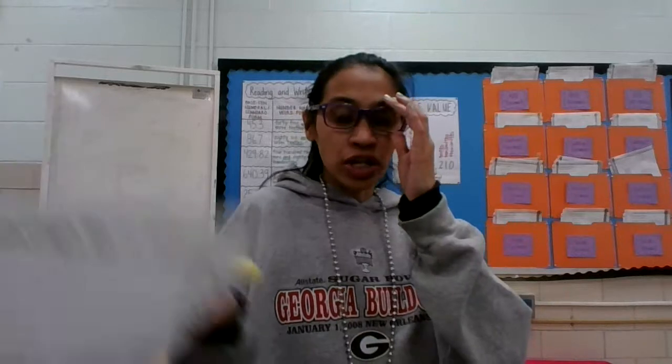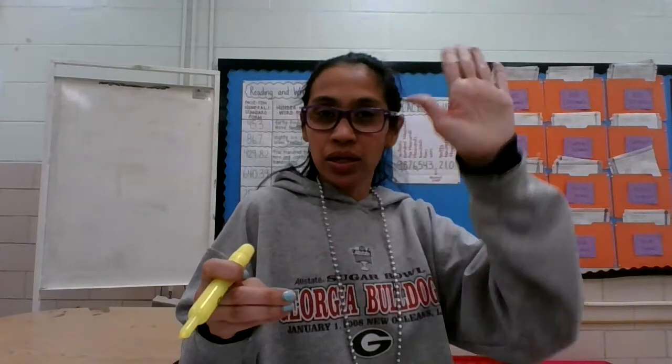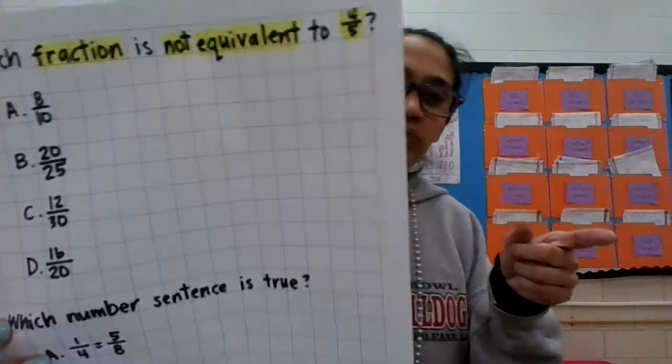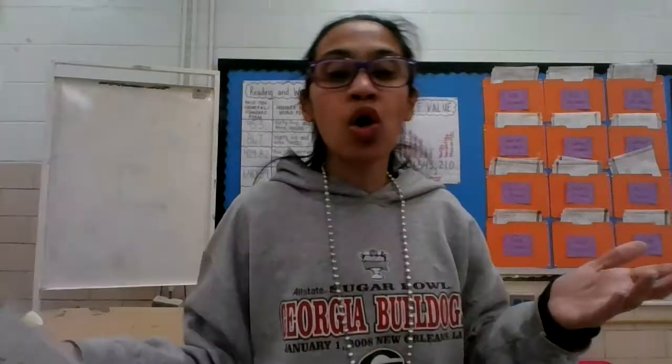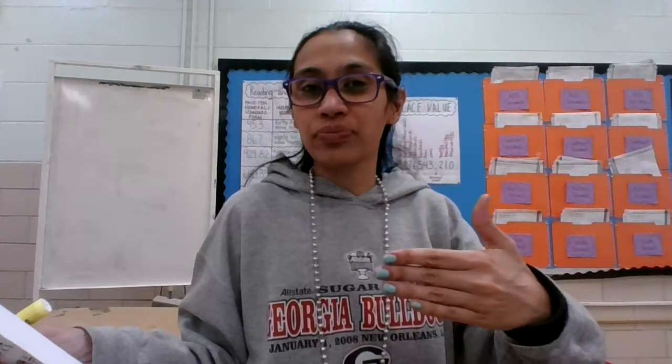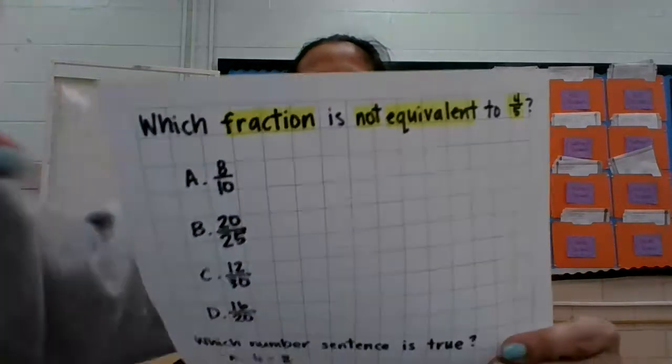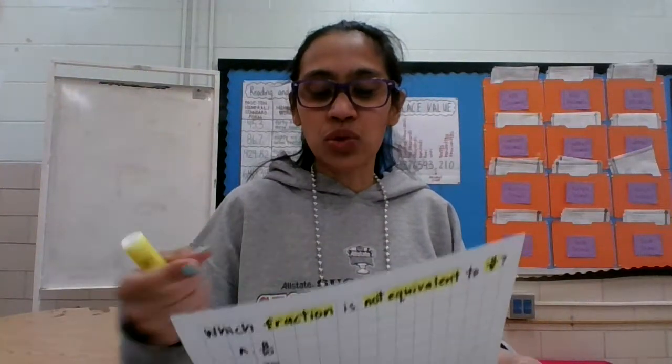You should have your fraction strips — the fraction bars in the baggie. Raise your hand if you have it. Make sure you bring that to school as a tool. There's another way too: we can either multiply or divide the numerator and the denominator by the same factor. So let's look at A: eight-tenths. How can we tell if four-fifths is equal to eight-tenths?